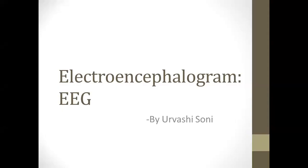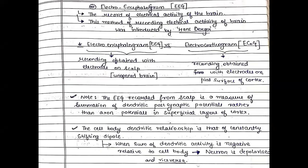Hello guys, this is another video and the topic for this video would be electroencephalogram or EEG, and we'll be talking about the different waves which are observed in it. So EEG is a record of the electrical activity of the brain.